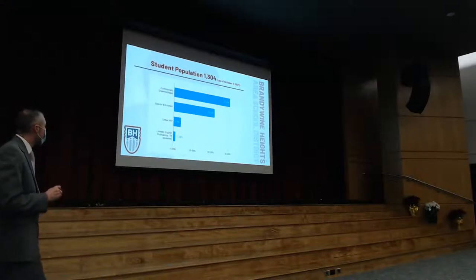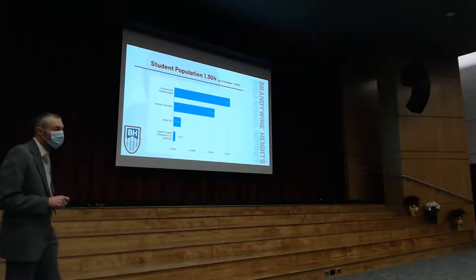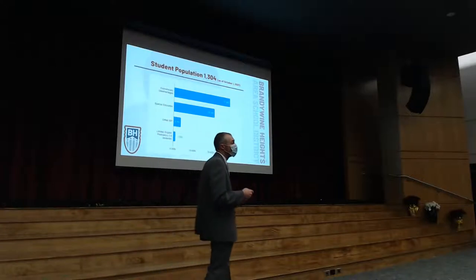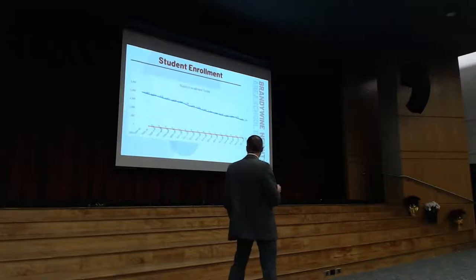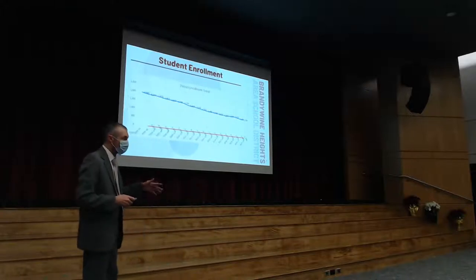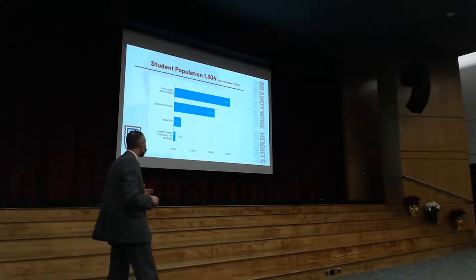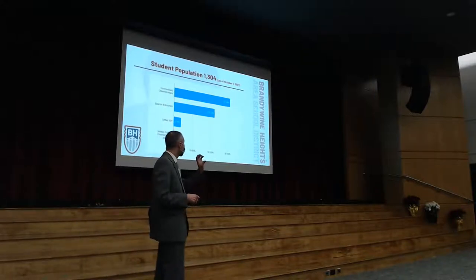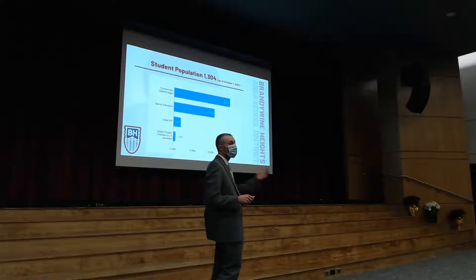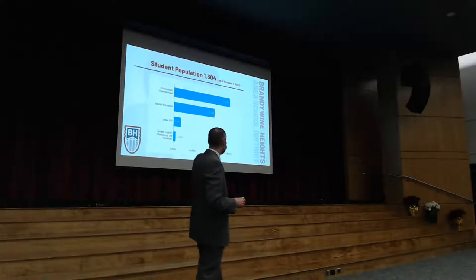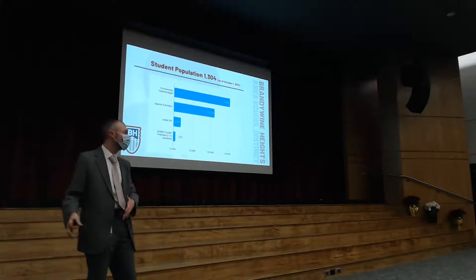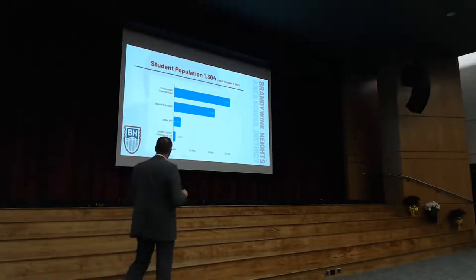Another change is the rise in economically disadvantaged students, measured by the number of students on free or reduced lunch. When I first started we had about 18% poverty; now we're at 31.5%. That number has been pretty steady for the last five years. This is definitely a concern, especially as we talk about equity — we want to make sure students who are less well-off have the same opportunities.